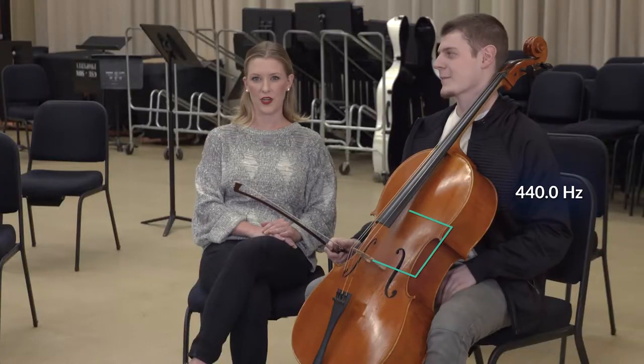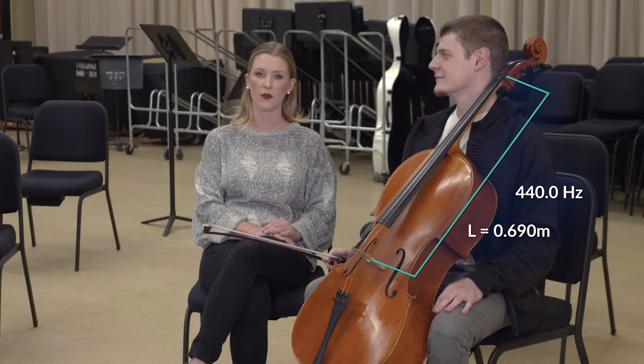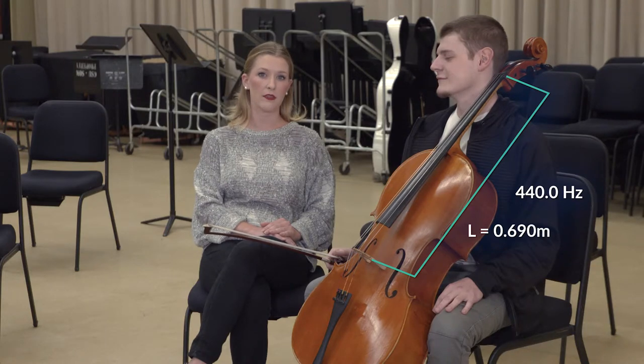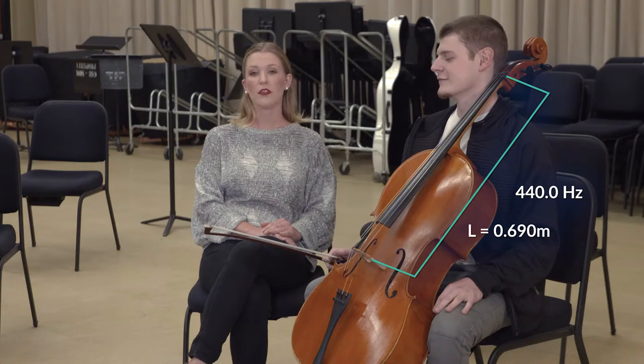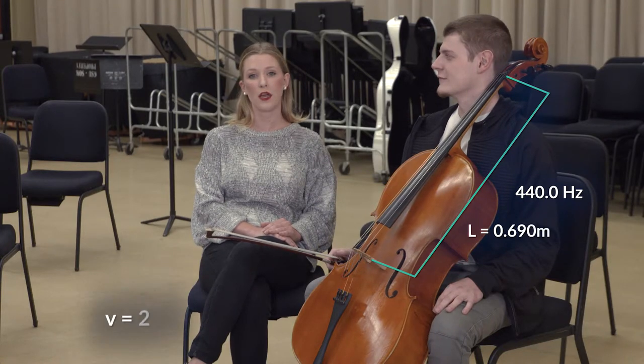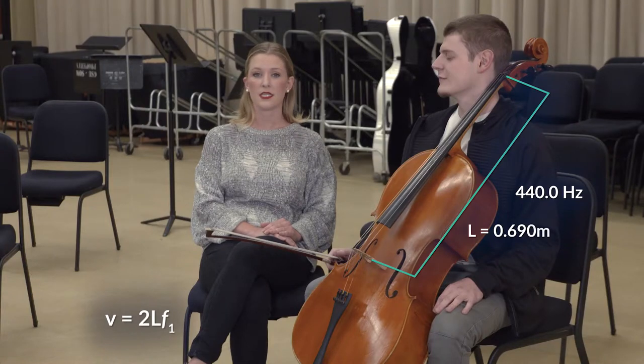The length of a cello string is 0.690 meters. Since the wavelength equals two times the length of the string for the fundamental frequency, the wave velocity equation becomes wave velocity equals two times the length of the string times frequency.